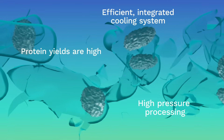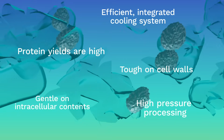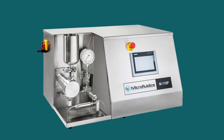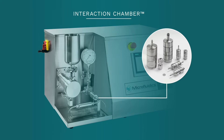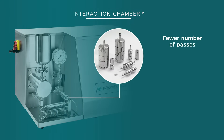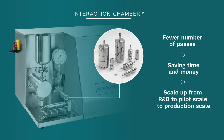Microfluidizer processors offer technology that is tough on cell walls and membranes, but gentle on the intracellular contents. The unique controlled shear rate, combined with the revolutionary interaction chamber at the heart of the equipment, results in fewer passes being needed to process material, thereby saving time, money, and enabling the ability to scale up from R&D to pilot scale to production scale. Each batch is handled exactly the same way, producing results that are consistent batch-to-batch.